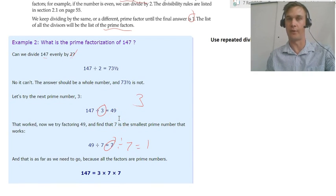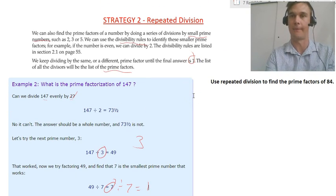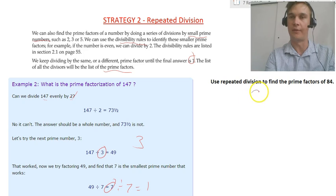We worked out that 3 was the first one, 7 and then 7. Let's do an example just so we can get a good idea of that and how you set it out. So we want to use repeated division for 84.